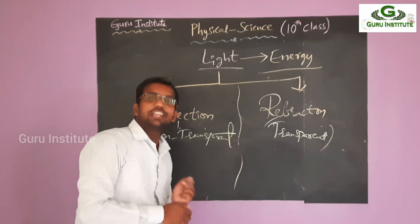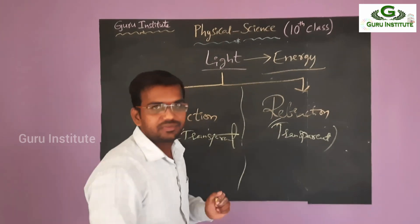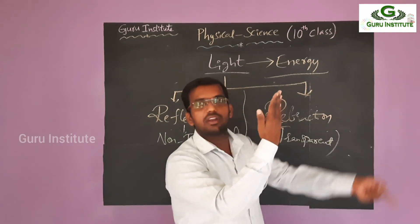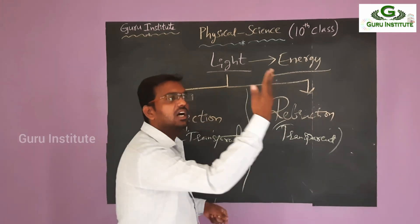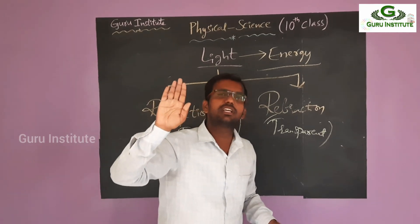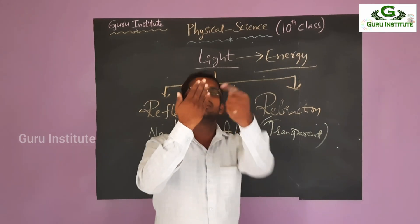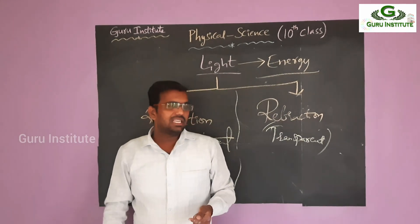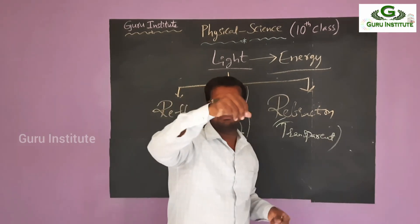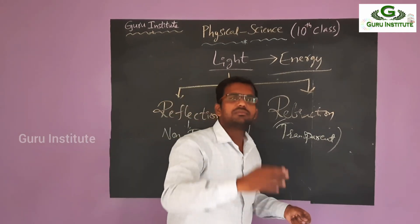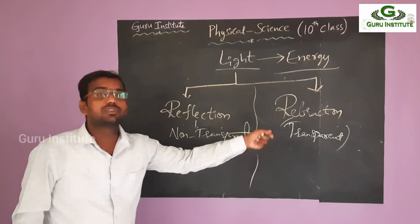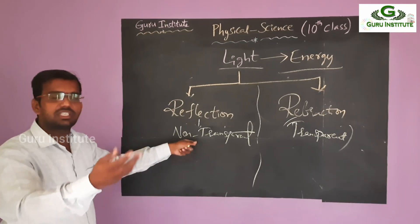Let's see. Transparent: if you are able to see the other side — if you take any object and you are able to see objects on the other side through it, then it is transparent. If you are unable to see the other side, then that is called non-transparent. My hand — is it transparent or non-transparent? This is obviously non-transparent. I can't see the other side through my hand. Suppose if you take a light cloth like a dupatta — you can slightly see the other side. Or if you take clear glass, you can see the other side clearly. So that is transparent. If you can see the other side, that is transparent; if you can't, that is non-transparent.